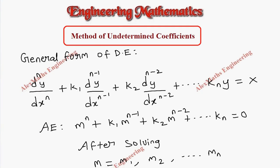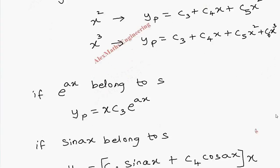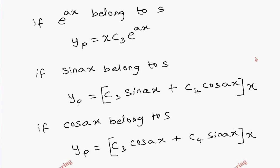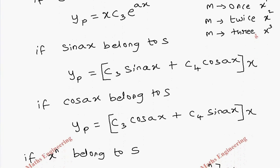There are special cases where the value of m may be repeated. If it is a repeated value, we do not only multiply by x, but by x^1, x^2, or x^3 depending on how many times it is repeated. If the value of m is repeated once, we multiply by x. If repeated twice, we multiply by x². If repeated three times, we multiply by x³. All these special cases will be clearly understood by solving a variety of problems.